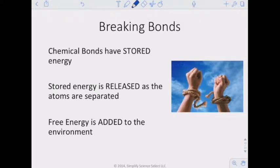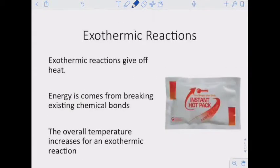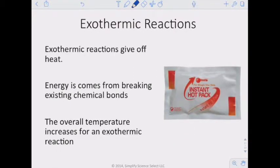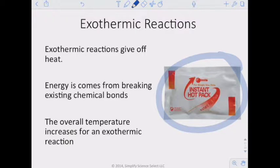Chemical bonds have stored energy, and that stored energy is released as atoms are separated — free energy is added to the environment. When we break bonds, we release that energy as free energy into the environment; that's an exothermic reaction. A good example is an instant hot pack — heat is released and you feel warmth because energy is released into your hand. The overall temperature increases for an exothermic reaction.